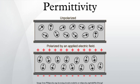In SI units, permittivity is measured in farads per meter. The displacement field D is measured in units of coulombs per square meter, while the electric field E is measured in volts per meter. D and E describe the interaction between charged objects. D is related to the charge densities associated with this interaction, while E is related to the forces and potential differences.